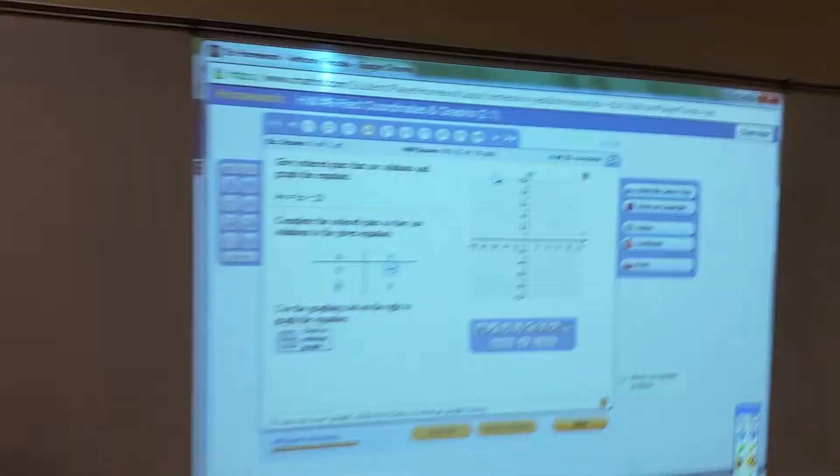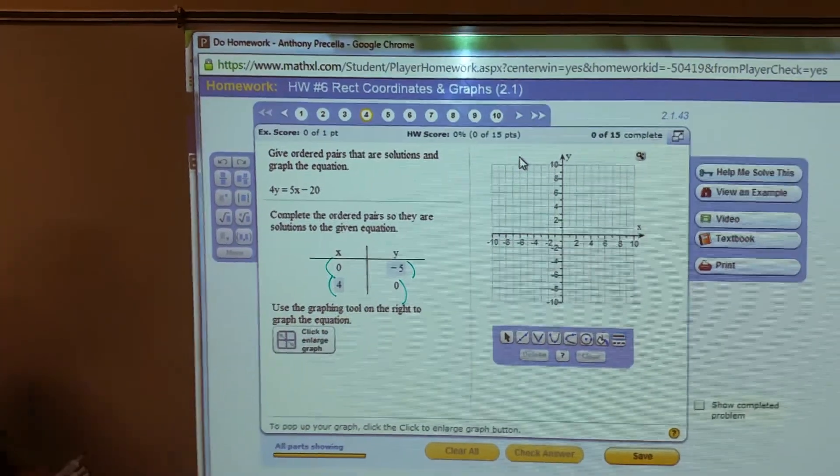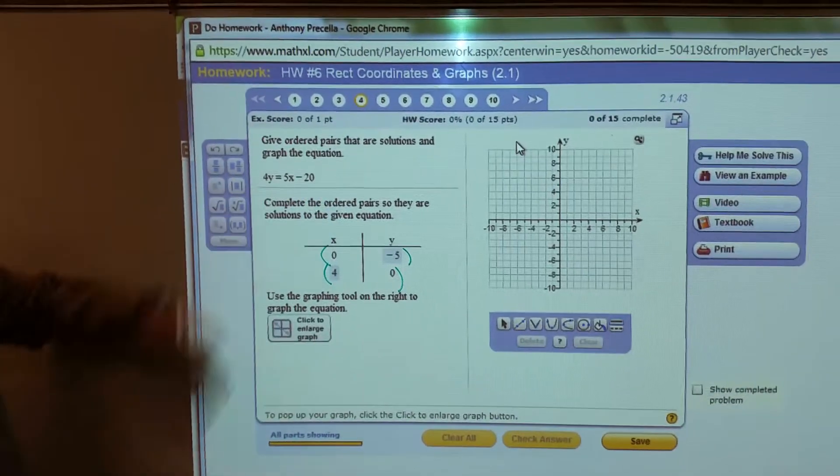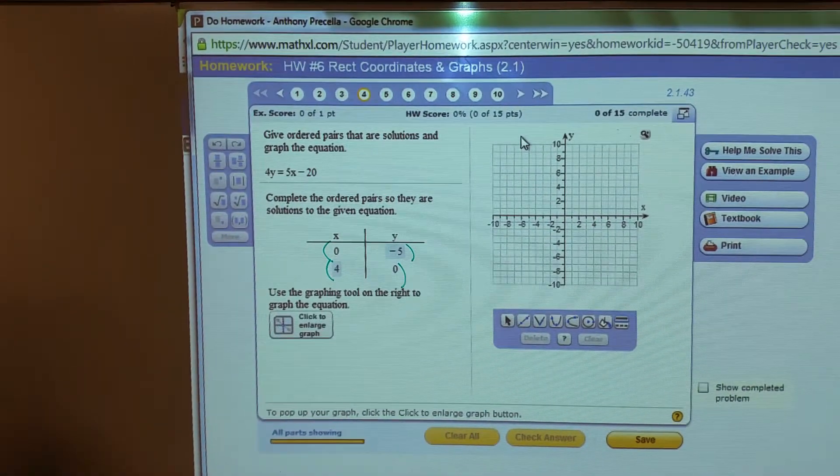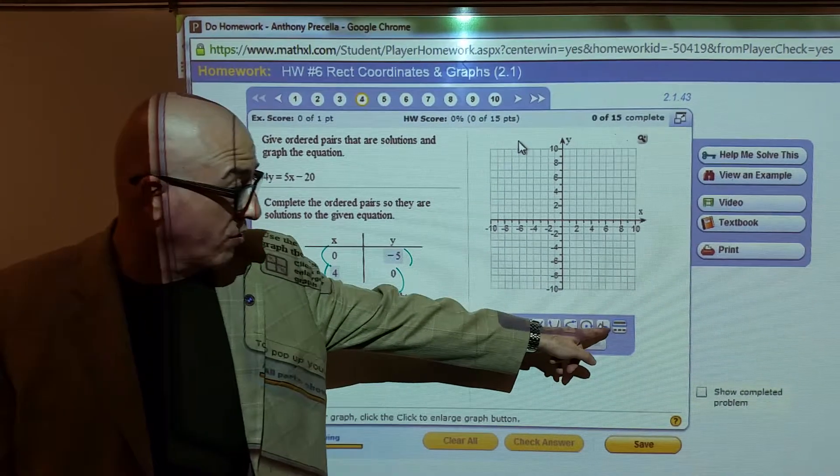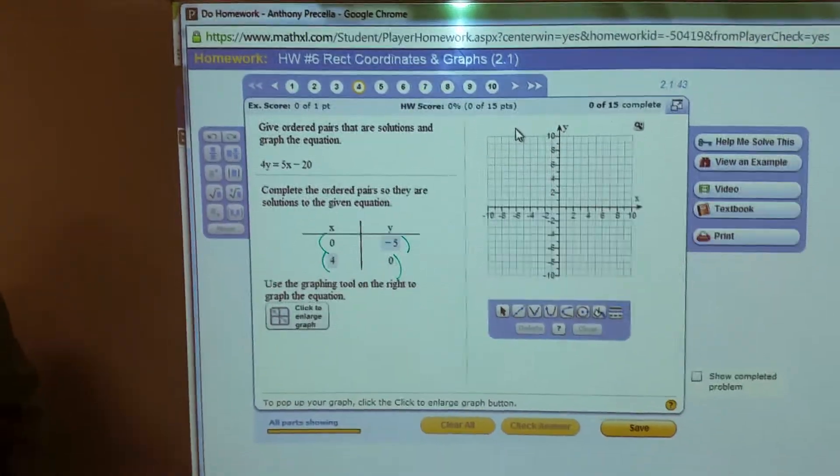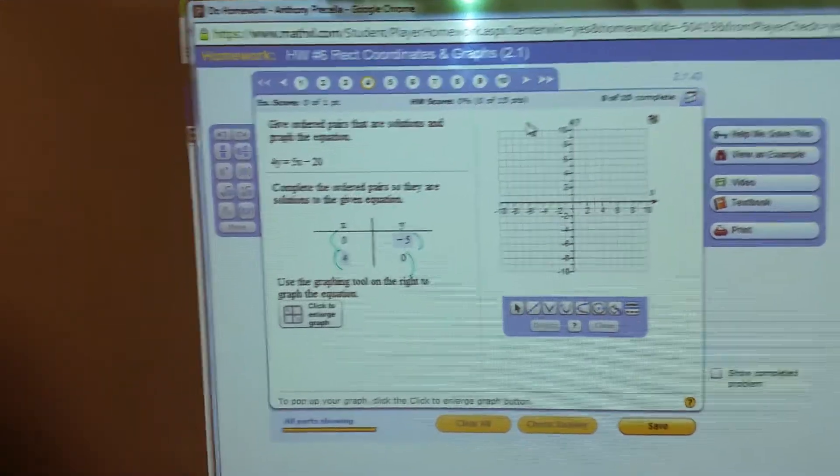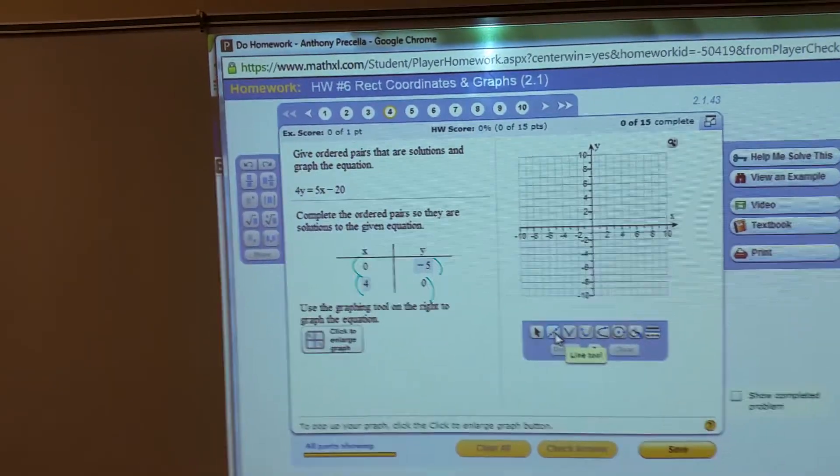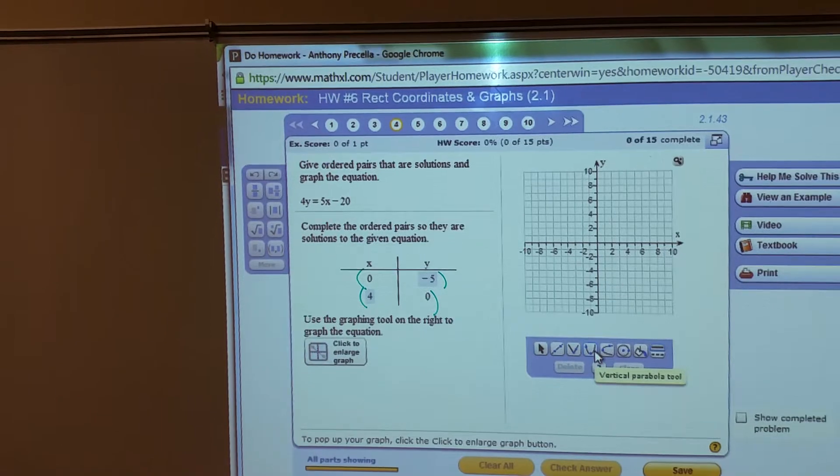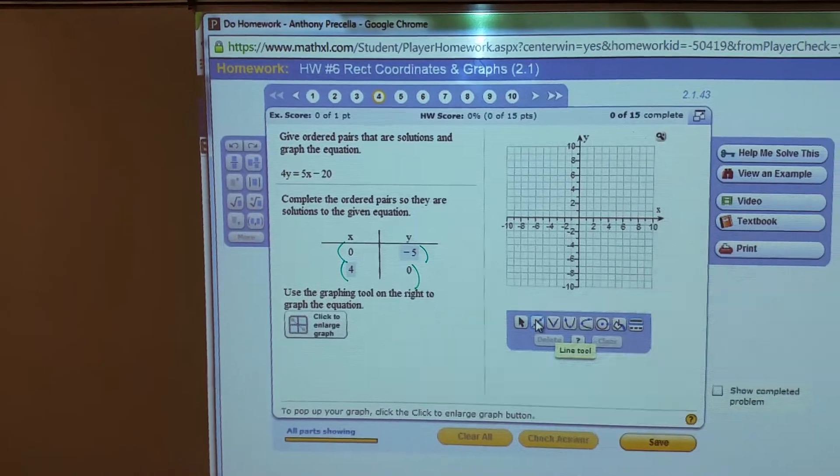So now we have two ordered pairs. Realize that each of these is an ordered pair that's on this line. This is a linear equation because there's no exponents on it, no square root symbols. In order to graph a line, we're going to use these tools down here. I've already said that this is a line, and so you can sort of tell right there, there's a line tool. First you click the line tool. All of these, if you hover your mouse over, will tell you the name of them.